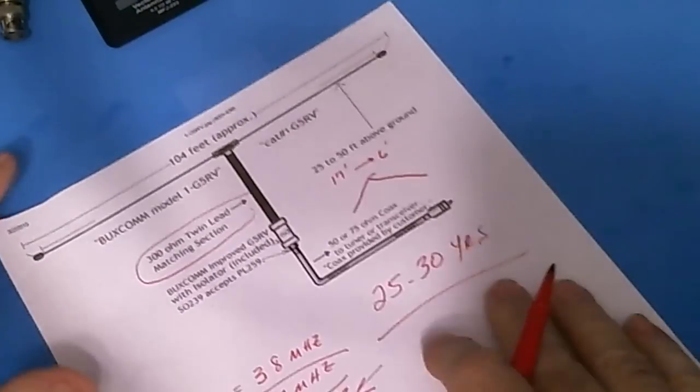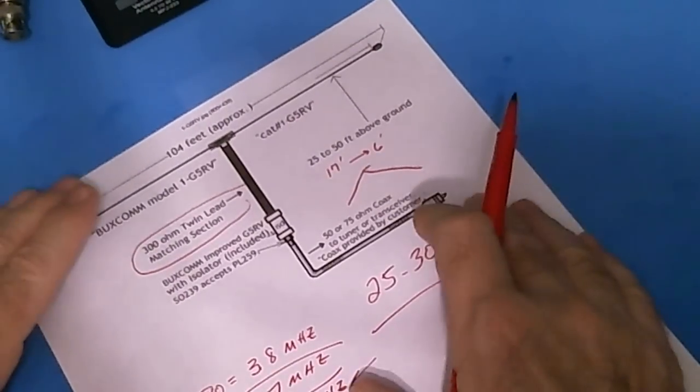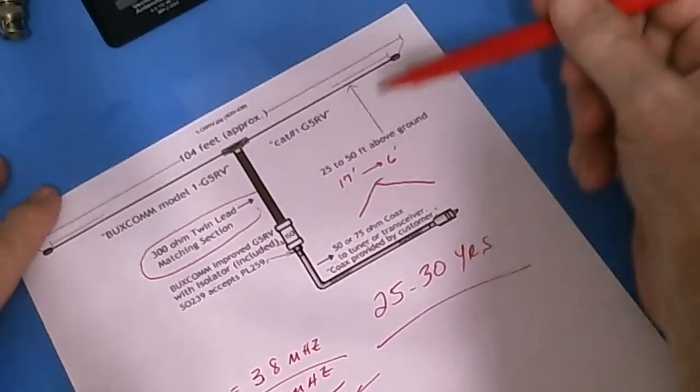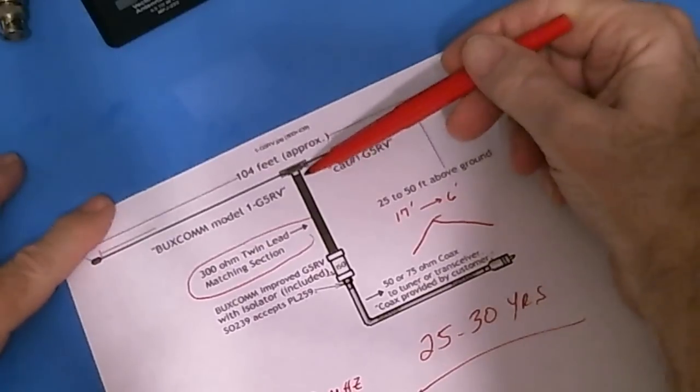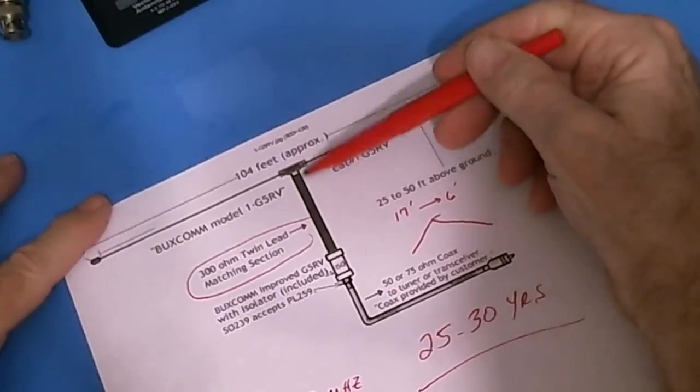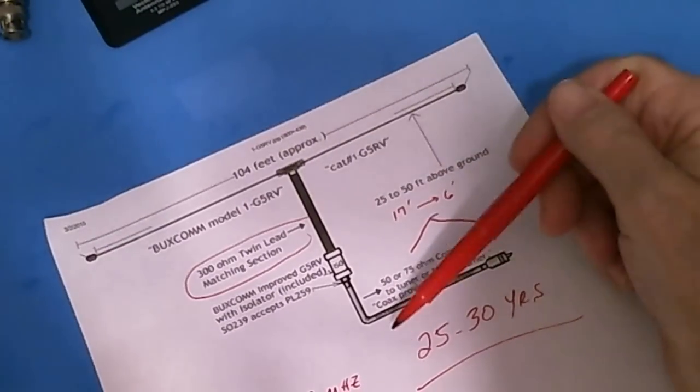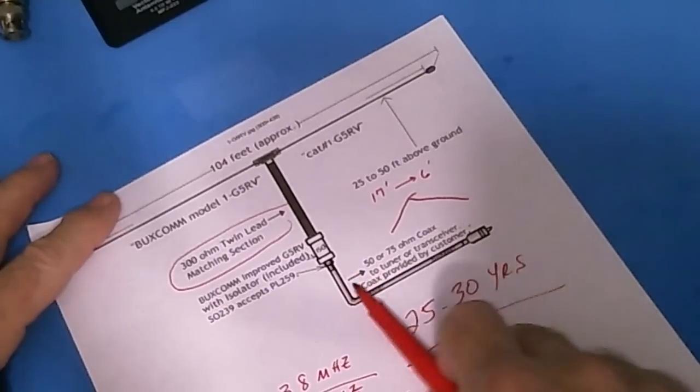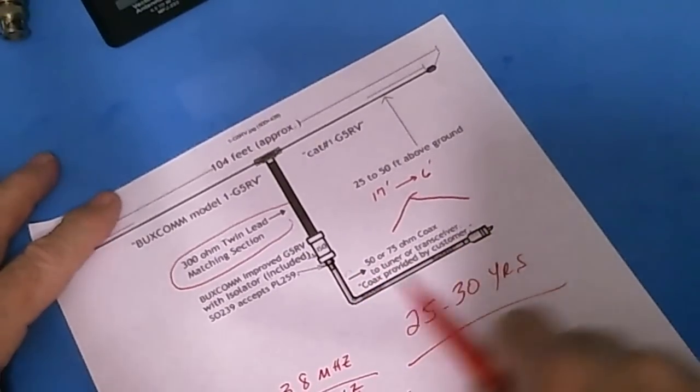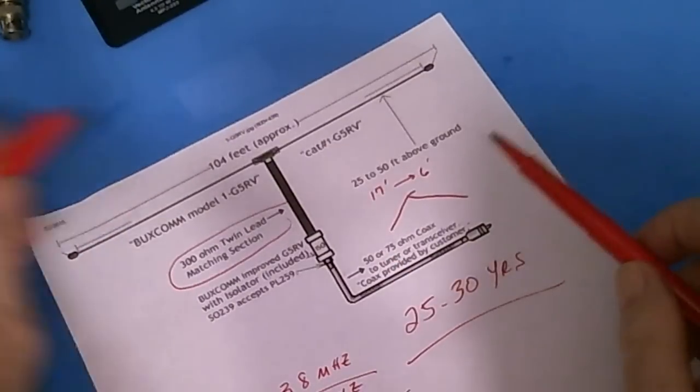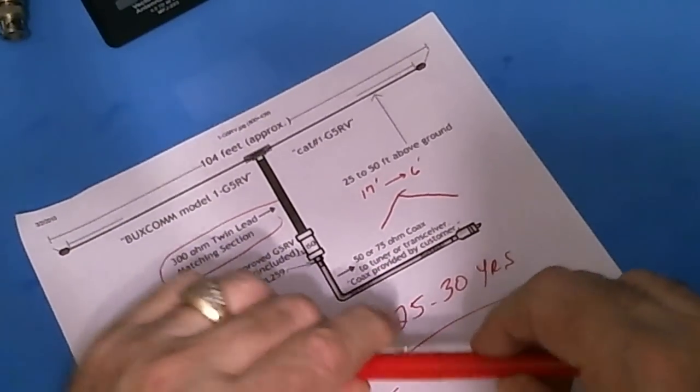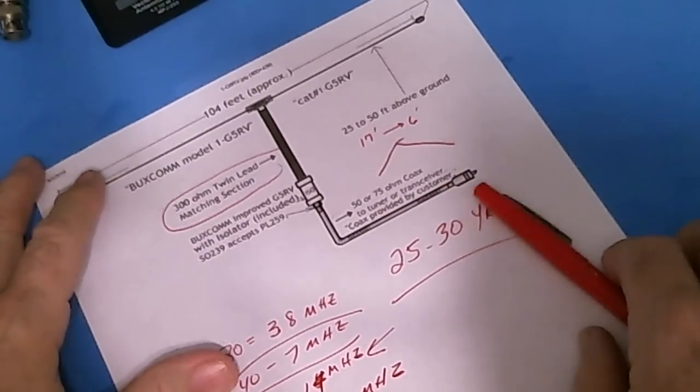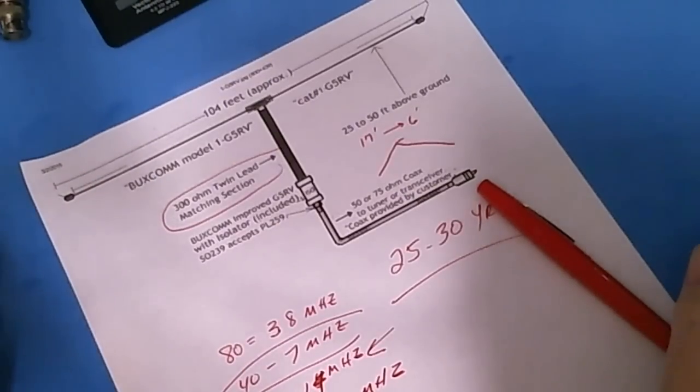So I just wanted to kind of explain to you that my particular G5 RV is not in an ideal situation. It's too close to the ground, number one. I don't have this twin lead piece of the antenna stretched out like it should be. I got it not coiled up, but I got it in a pile. And the same thing with this coax, number one, it's too long. I don't need it that long, and that's just piled in a pile. So that kind of explains why my G5 RV is not working ideally. But it is still working pretty good, as you've seen in some of my videos.